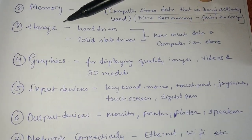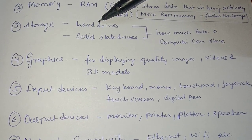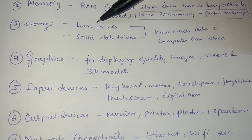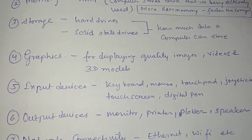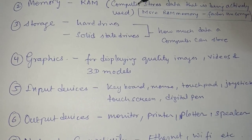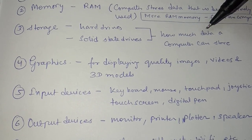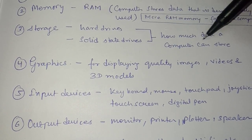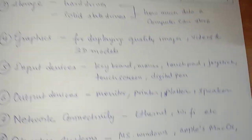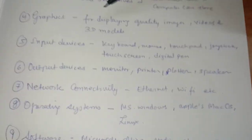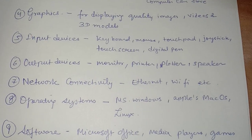For storage, there are two types: HDD (hard disk drive) and SSD (solid state drive). This determines how much data the computer can store, and that capacity is defined by the storage.